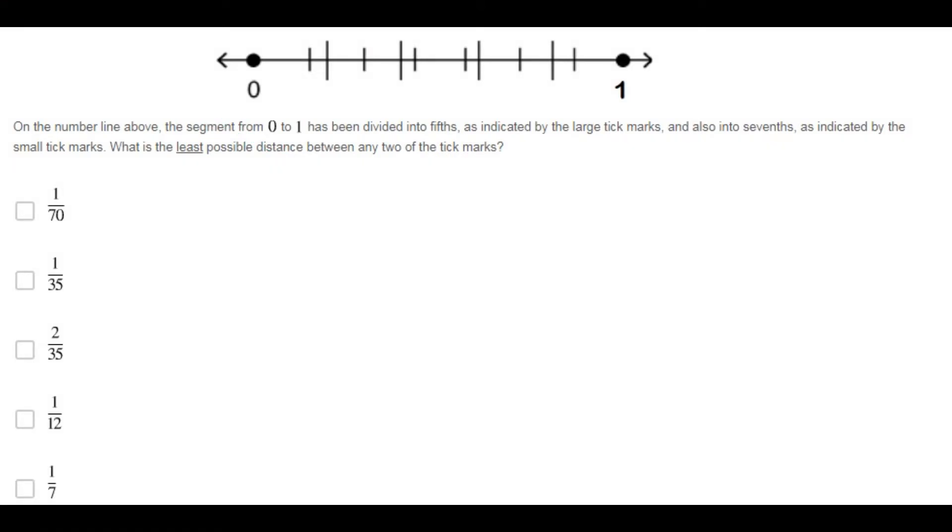On the number line above, the segment from 0 to 1 has been divided into fifths, as indicated by the large tick marks, and also into sevenths, as indicated by the small tick marks. What is the least possible distance between any two of the tick marks?